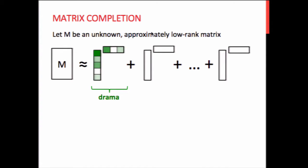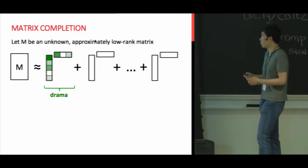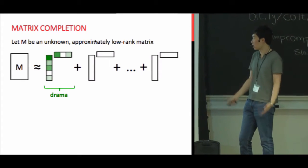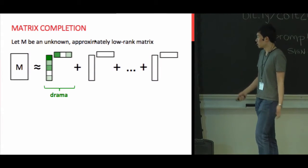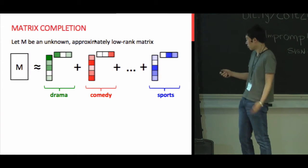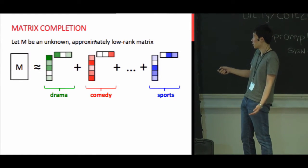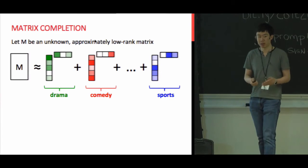For example, if we think of the rows of M as representing users and the columns as representing movies, then in the first component the column vector captures how much a user likes drama movies, and the row vector values correspond to how much a particular movie is considered to be in the drama category. This is why we believe the matrix between users and movies will have this approximate low-rank structure.